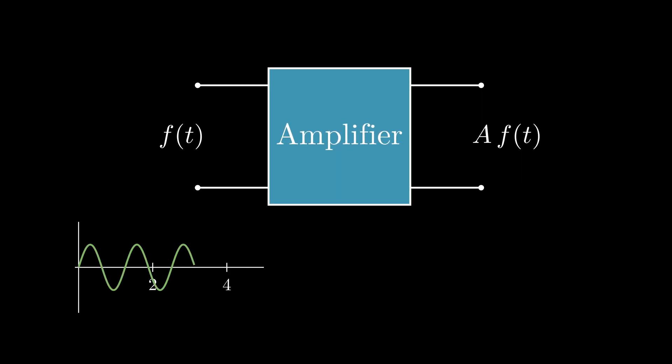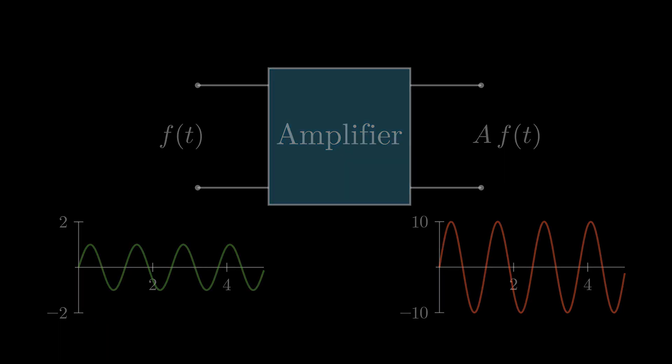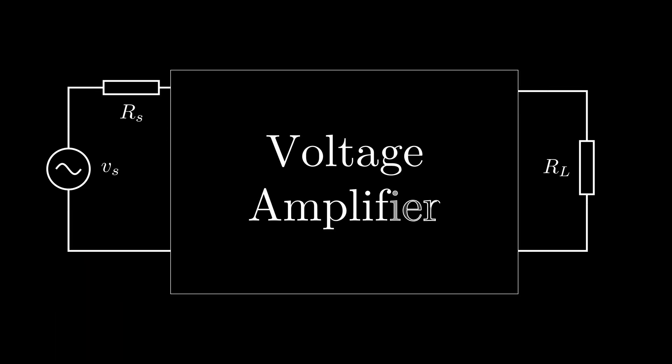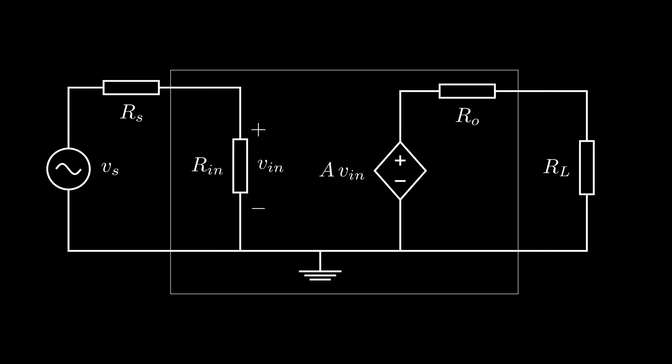An amplifier is a device that takes in a signal and spits out an amplified version of it. For example, a voltage amplifier can be modeled with a voltage controlled voltage source. It takes in a voltage as input and gives a scaled or amplified version of it at the output.